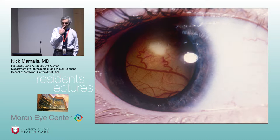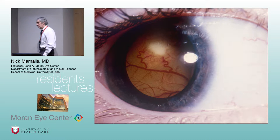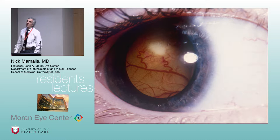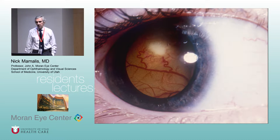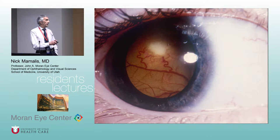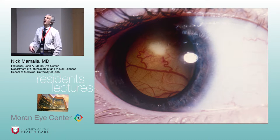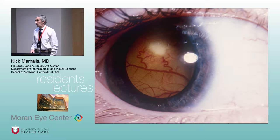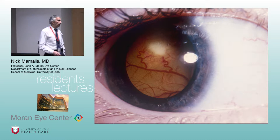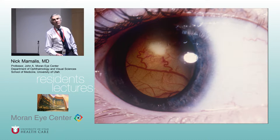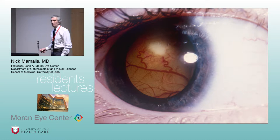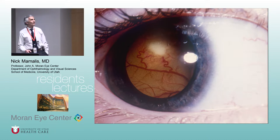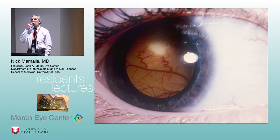We're looking at a patient — a child — where mom notices something funny in the pupil. Maybe it's noticed in a picture or during examination. We dilate the kid's eye and we see this picture. This child had leukocoria. I want to talk about the entities we have to think about when we think about leukocoria. Differential diagnosis of leukocoria.